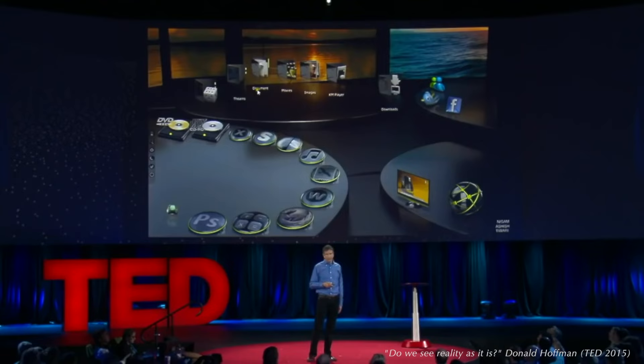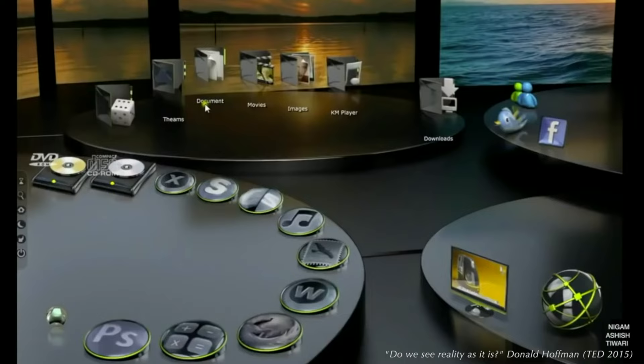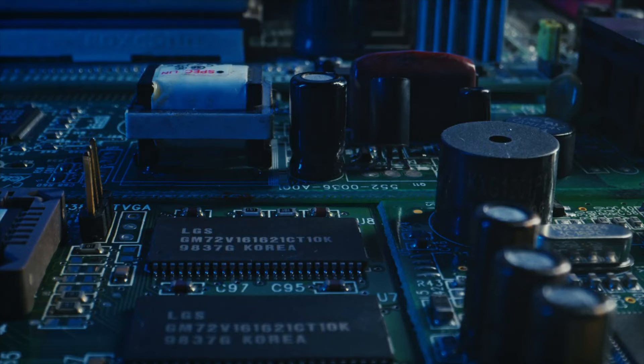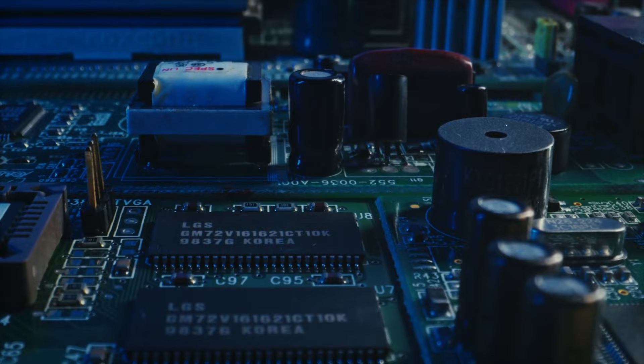Now, if we don't see true reality, then what are we experiencing? Hoffman thinks we experience life within a species-specific interface, akin to a computer screen. Folders and apps are merely symbols, hiding the diodes, transistors, and other electronics running the illusion. Space and time themselves are figments of our imagination.